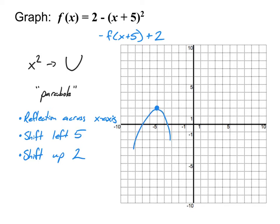I need to be precise about where points go. Normally with x squared, going over 1 means up 1, but since we're opening downward, I go over 1 and down 1. Going over 2: 2 squared is 4, so over 2 and down 4. Going over 3: 3 squared is 9, so over 3 and down 9. I fill in the same pattern on the left side — over 1 down 1, over 2 down 4, over 3 down 9. Once plotted, I draw the curve through those points.